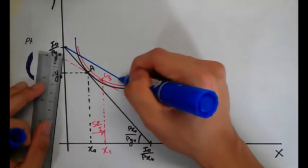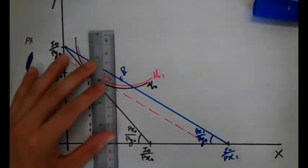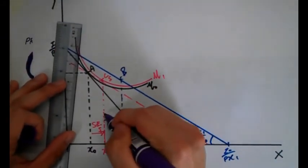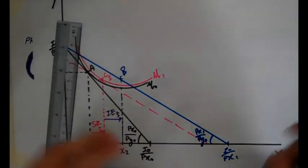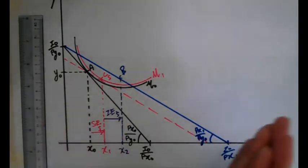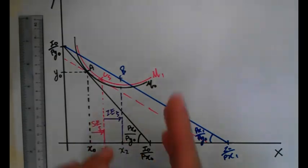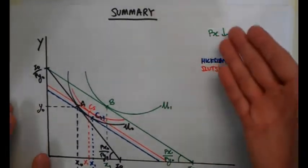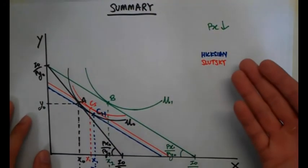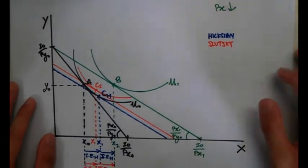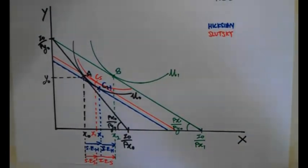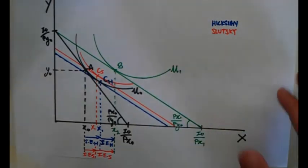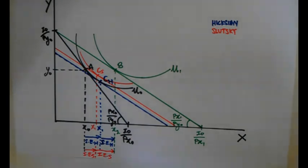Now we just add point B, and from X1 to X2 is the income effect. That is the difference between the Slutsky and the Hicksian analysis — basically it's where point C lands, and that is the only difference. To summarize: the price of X has gone down. The blue lines show the Hicksian effects, and the orange line shows the Slutsky effects. Just really take note of where point C lands — that's the most important part. These are the basics for the Hicksian and Slutsky substitution and income effects.